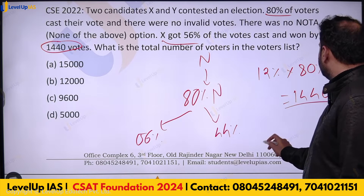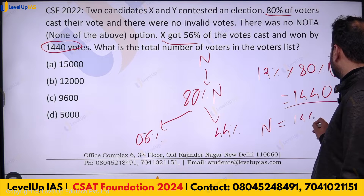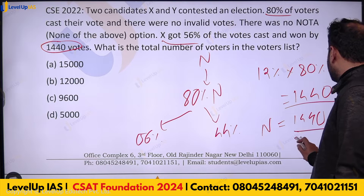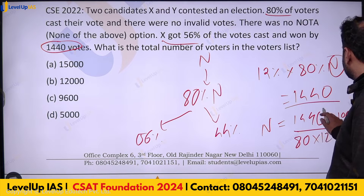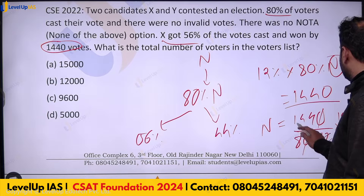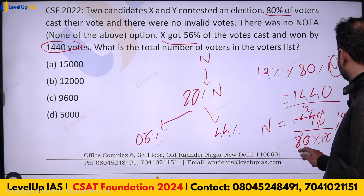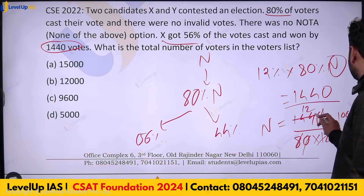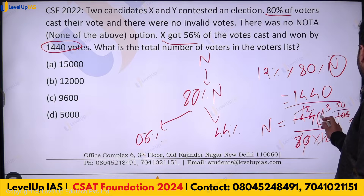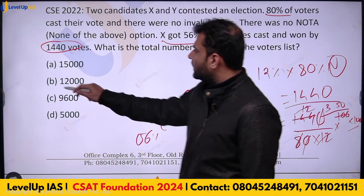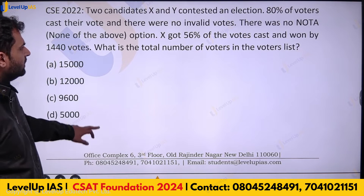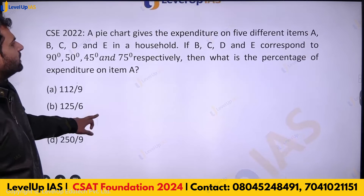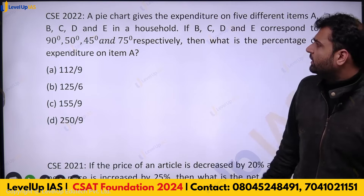Solving: n = 1440 ÷ (80/100 × 12/100). Simplifying step by step — cancelling zeros and dividing common factors — gives n = 15,000. This is a straightforward percentage question; only basic percentage manipulation was needed.